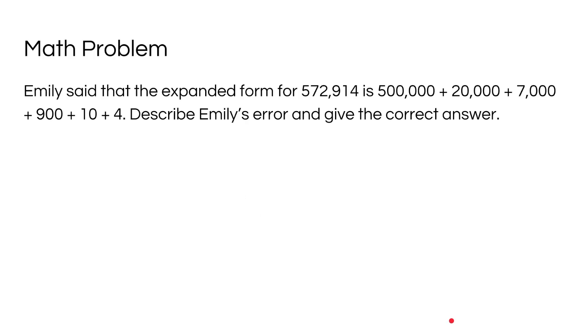So here's our math problem. Emily said that the expanded form for 572,914 is 500,000 plus 20,000 plus 7,000 plus 900 plus 10 plus 4. Describe Emily's error and give the correct answer.